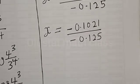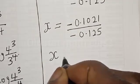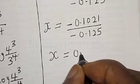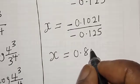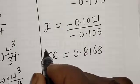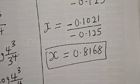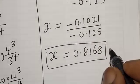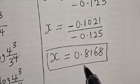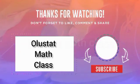Therefore our final answer is x is equal to 0.8168. That is the value of x. If you have enjoyed the class, please don't forget to like, share, comment, and subscribe. And if you have a better method, kindly let us know. Thank you so much.